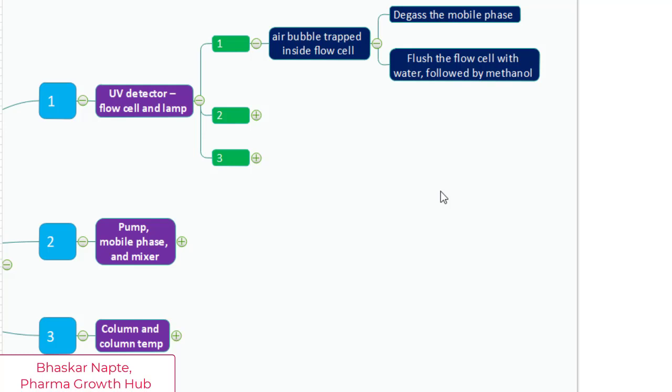In case your air bubble is not getting removed, you can flush the flow cell by using water followed by methanol.